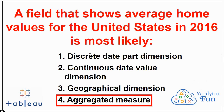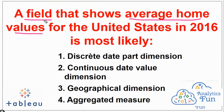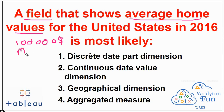The correct answer to this question is option 4, that is aggregated measure. The keyword here is the field contains average home value. Average home values are numerical data such as $100,000 or $200,000, so they are a measure and not a dimension.